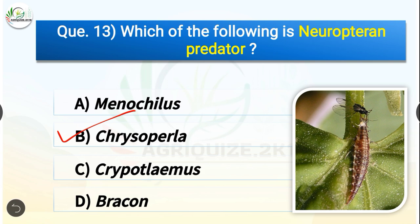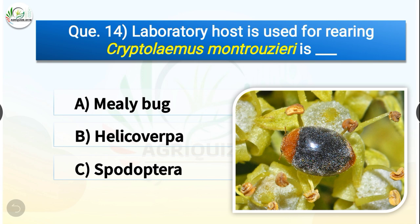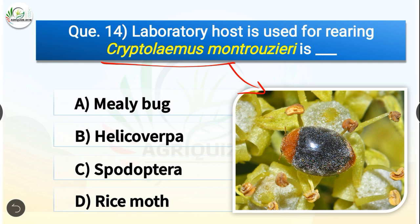Question number fourteen: Laboratory host used for rearing Cryptolaemus montrouzieri is dash. The options are mealybug, Helicoverpa, Spodoptera, or rice moth. The correct answer is option D — rice moth. Laboratory host used for rearing Cryptolaemus montrouzieri is rice moth. Also, Cryptolaemus montrouzieri is an important predator of the mealybug.